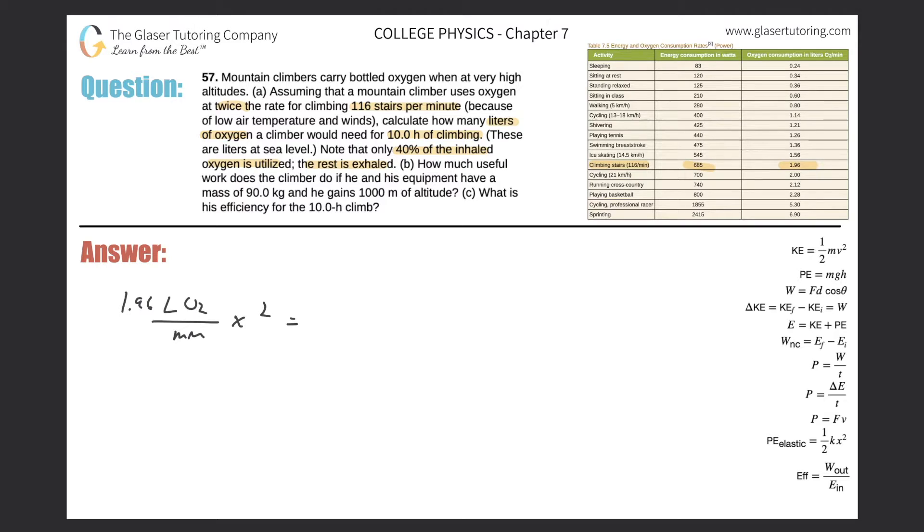So 1.96 times two - oxygen is being consumed at a rate of 3.92 liters per minute. Remember, that's how it's being consumed. That doesn't mean the actual amount inhaled. That's just the amount utilized for metabolism. So let's put a box around this.